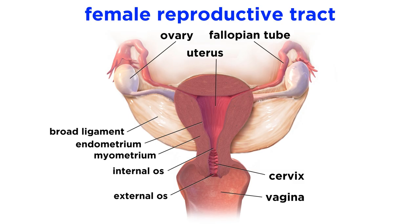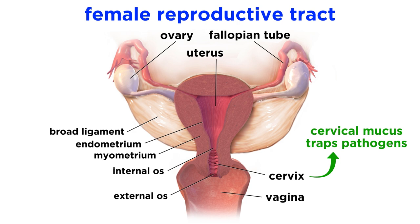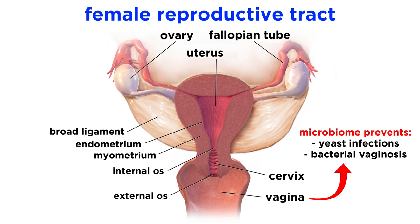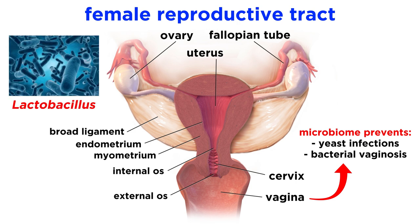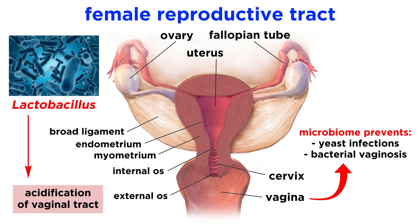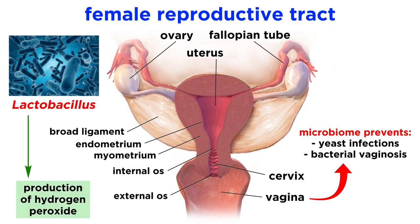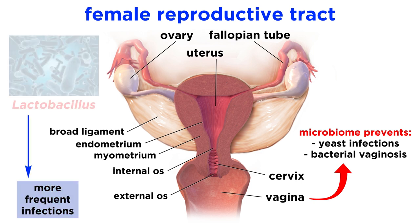The last barrier surface we will discuss is the female reproductive tract, which is an often overlooked site of important barrier biology. Like mucus in other parts of the body, cervical mucus can trap invading pathogens. The vaginal microbiome plays a particularly important role in preventing yeast infections and bacterial vaginosis. Lactobacillus species are the dominant colonizers of the female reproductive tract. These bacteria metabolize glycogen to lactic acid, acidifying the vaginal tract and making it inhospitable for many other species to grow. They also produce hydrogen peroxide, which is an effective antimicrobial against many other bacterial species. Reductions in vaginal Lactobacillus species have been associated with more frequent yeast and bacterial infections, suggesting that it is directly inhibiting outgrowth of pathogens.